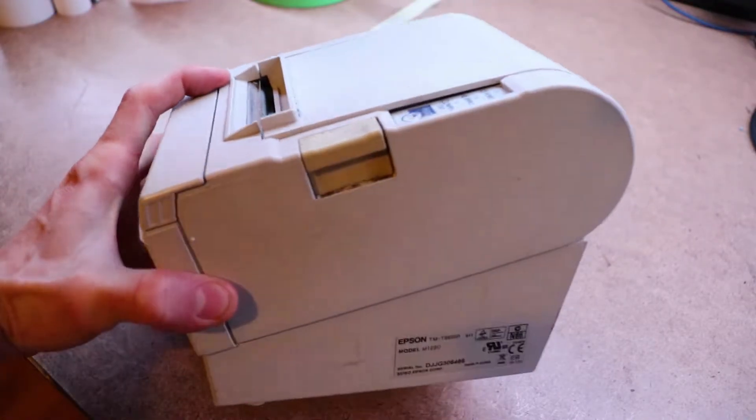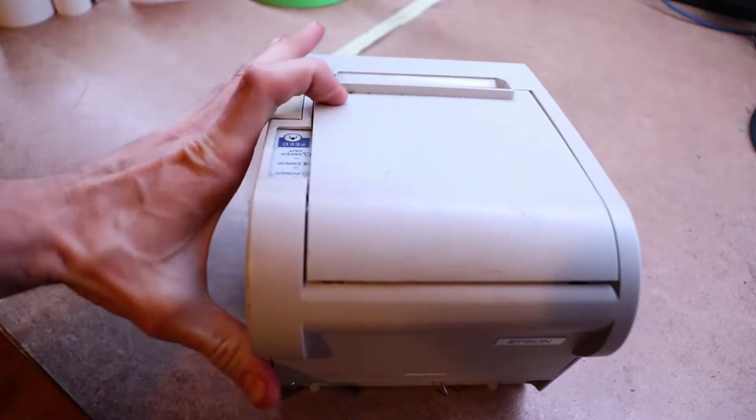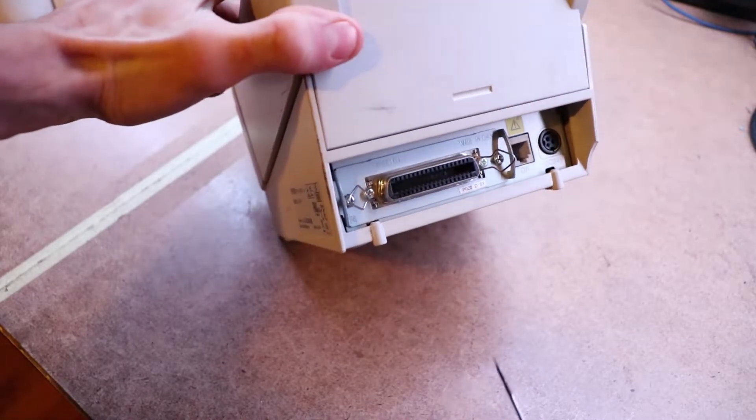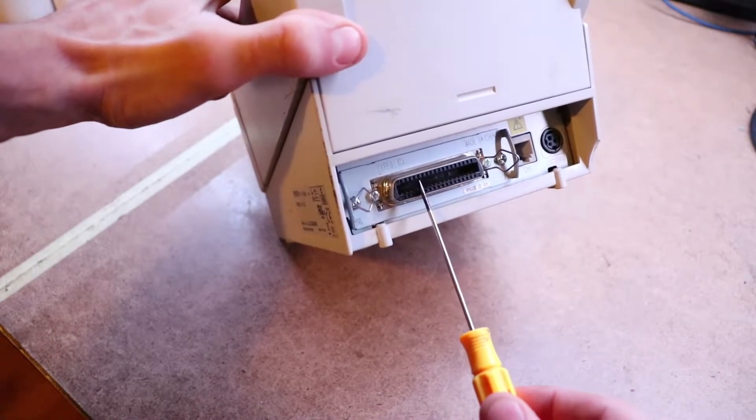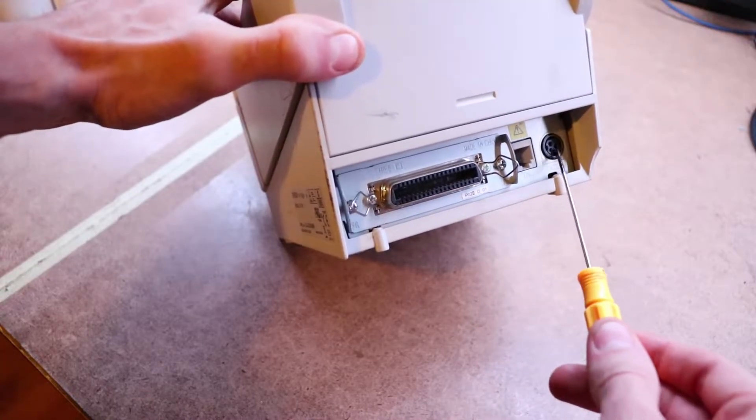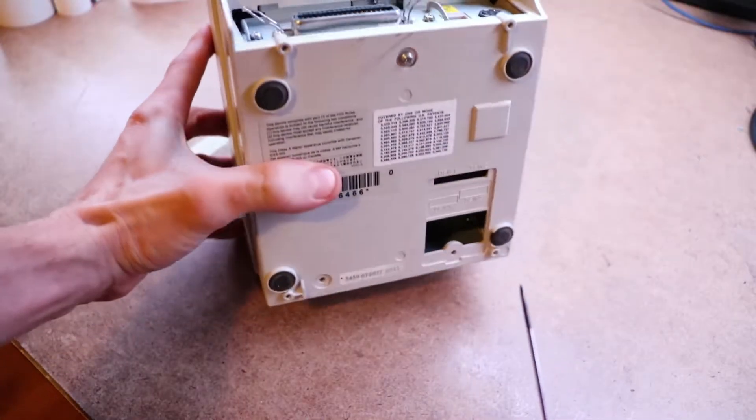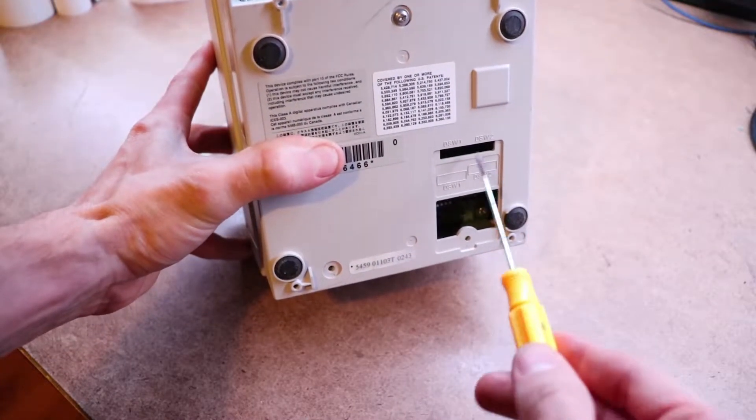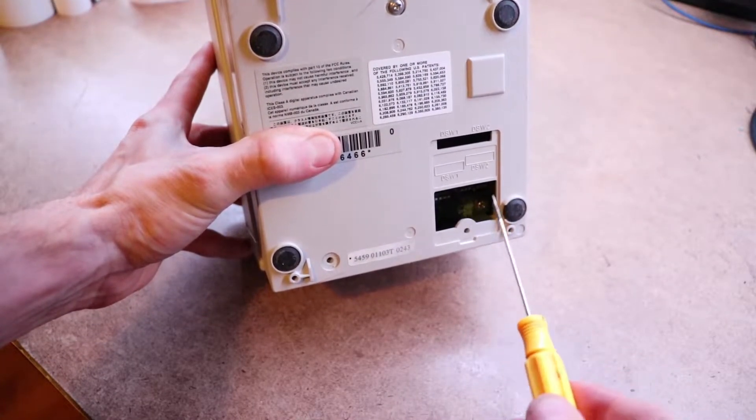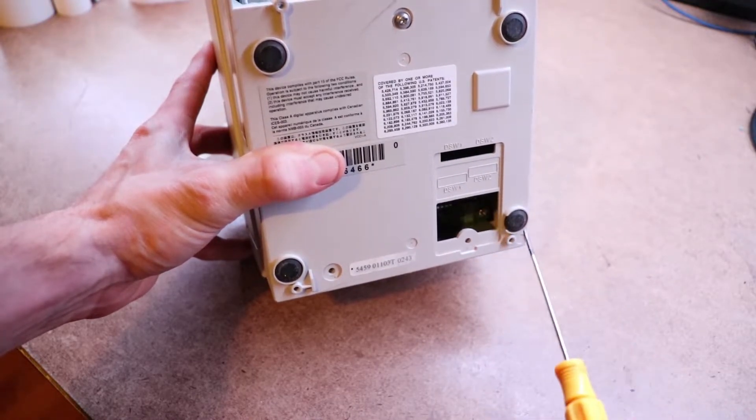The model number is right here. On the back end you can see that you have a parallel port and a serial port to communicate with the printer. And this is the power that comes in. On the back there's a port over here where you can access dip switches to change configurations on the printer.